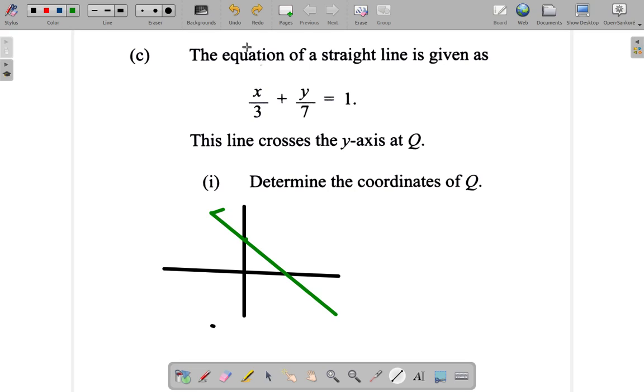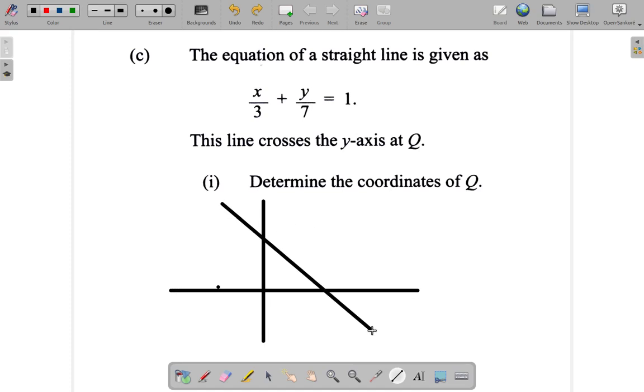If you said 0, you would be right. So it crosses the y-axis at 0, x equals 0. We have the y-axis, x-axis. Let's use this as our line, and it crosses right here.